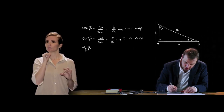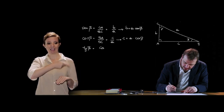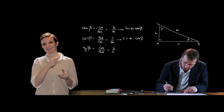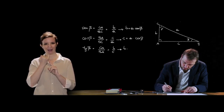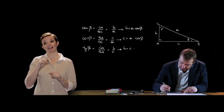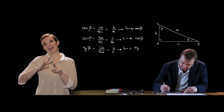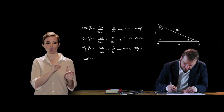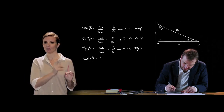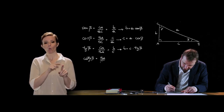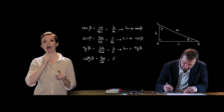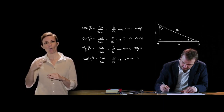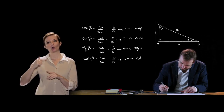Sempre per definizione, la tangente non è altro che CA/BA, e quindi pari a B/C. Vuol dire che un cateto è uguale a C (l'altro cateto) per la tangente di β. E infine, la cotangente di β, sempre per definizione, è pari a BA/CA, ossia C/B. Quindi C sarà pari a B per la cotangente di β.